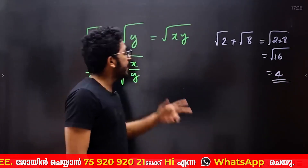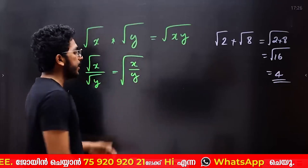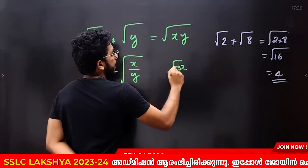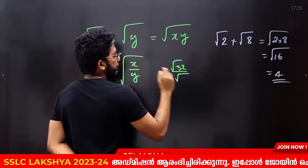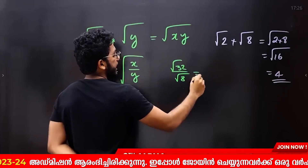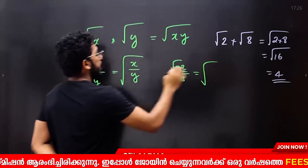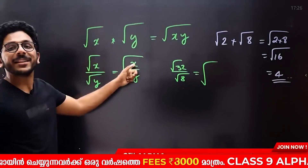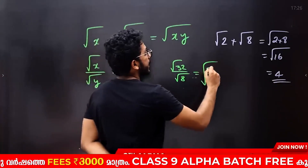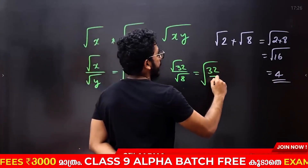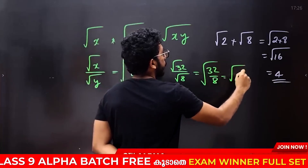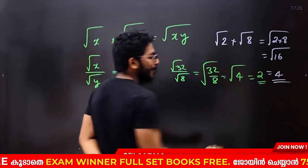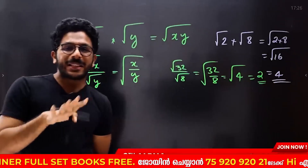Now let's take another example: root 32 divided by root 8. That gives root of 32 divided by 8, which is root 4. What is root 4? The answer is 2.